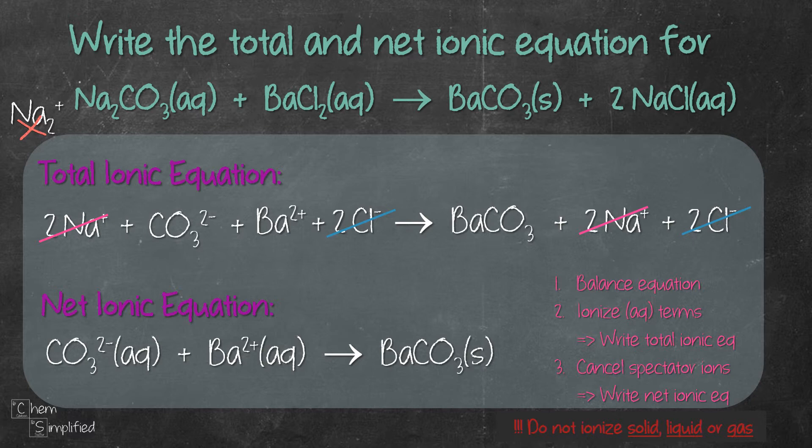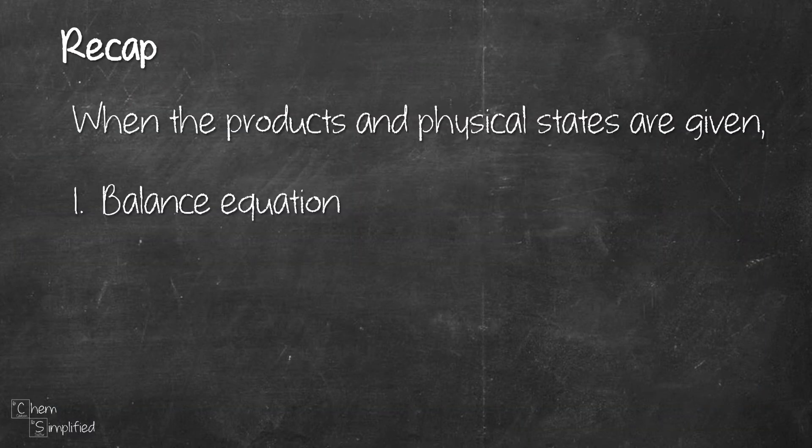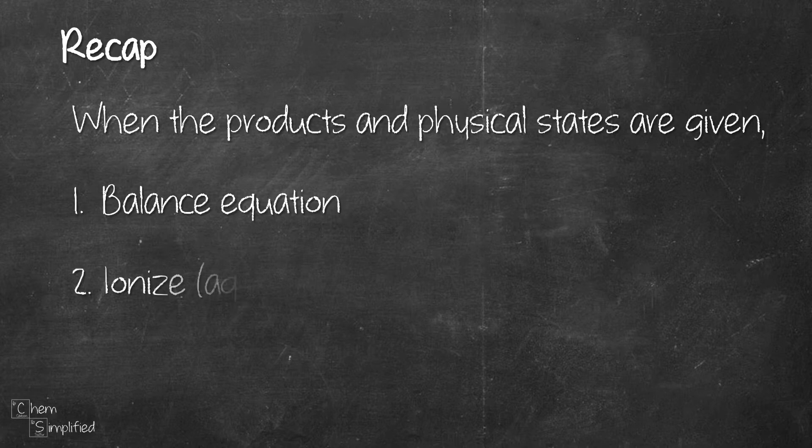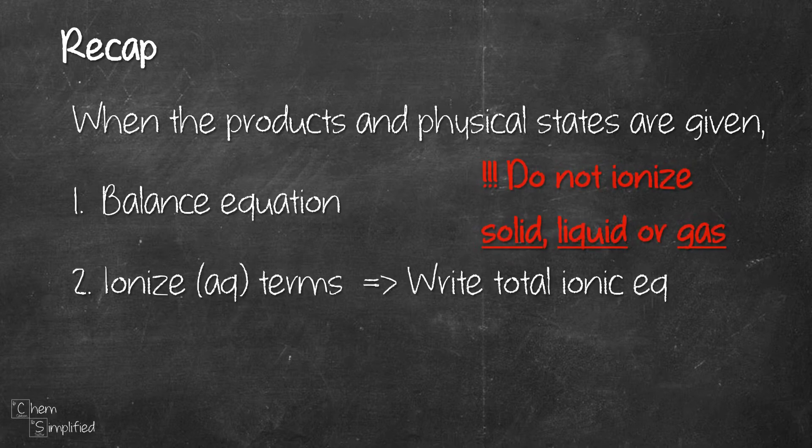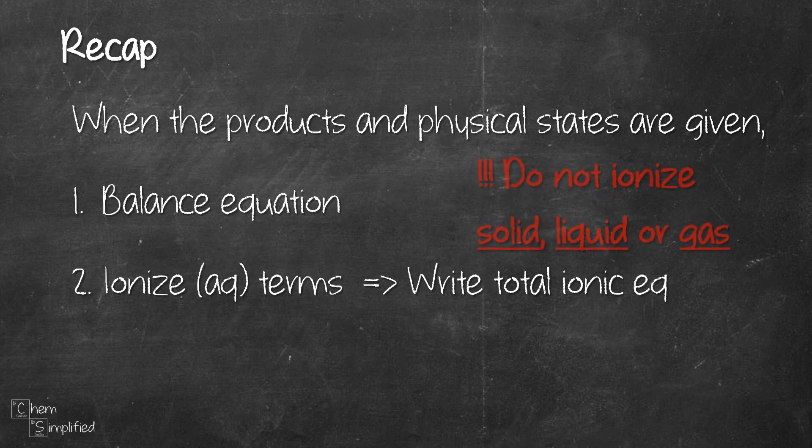We managed to write the total and net ionic equation in three steps. When everything is given in the equation, we need to make sure that it's first balanced, and then we split only the aqueous terms. We leave the solid, liquid, and gas terms alone. That will give us the total ionic equation.